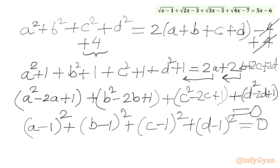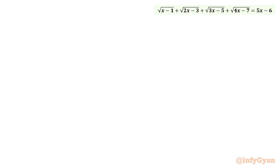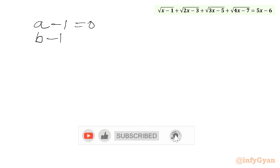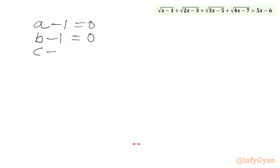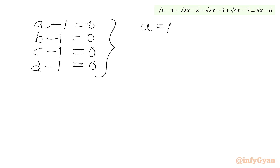Each bracket is a perfect square algebraic identity. So we can write: (a minus 1)² plus (b minus 1)² plus (c minus 1)² plus (d minus 1)² equals 0. Since the sum of squares equals zero, each bracket must equal zero individually. Therefore a minus 1 equals 0, b minus 1 equals 0, c minus 1 equals 0, and d minus 1 equals 0, giving us a equals 1, b equals 1, c equals 1, and d equals 1.